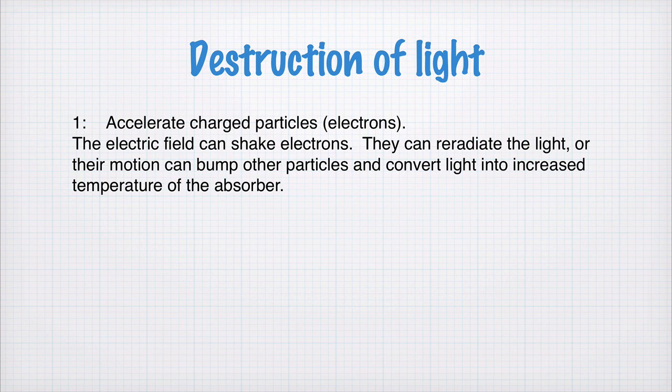and these shaking electrons can re-radiate the light, or the motion of the electrons can bump into other particles and convert the light into increased temperature of the absorber. So in that way, the incoming photons, or electromagnetic radiation, can be converted into the temperature of the absorber.